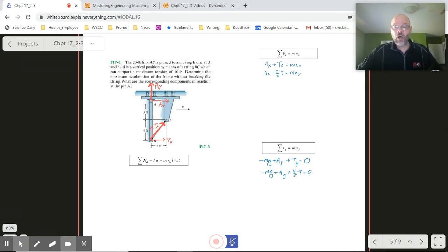So far I've got Ay is unknown, Ax is unknown, the acceleration is unknown. So I've got three unknowns right now because what we're going to eventually do is substitute in for T, which is going to be 10.